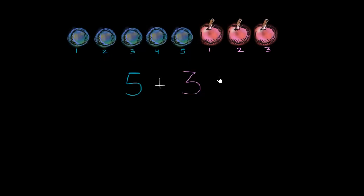And so how many blueberries do I have? Well, what's five plus three? It's one, two, three, four, five, six, seven, eight pieces of fruit. Eight pieces of fruit.